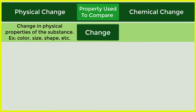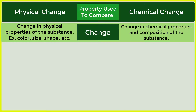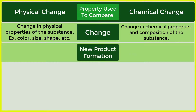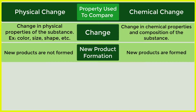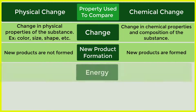In a physical change, there is a change in physical properties of the substance — such as color, size, and shape. In a chemical change, there is a change in chemical properties and composition of the substance. Regarding new product formation: physical changes do not form new products, whereas chemical changes result in new products being formed.